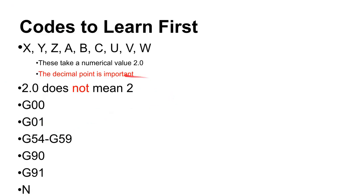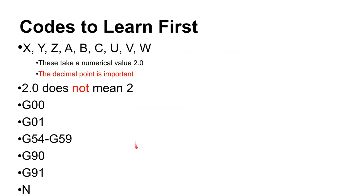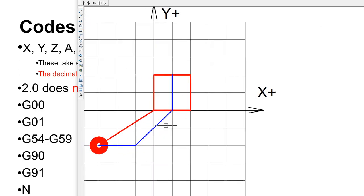To review: G1 moves in a straight line at a specified feed rate; G90 is absolute mode; G91 is incremental mode; G54 through G59 set the origin for the coordinate system. Looking at sample code: first, boilerplate safety code ensures the machine always behaves consistently at startup. Then a tool and tool offset are requested, the spindle turns on, a rapid move is made, and then linear moves are made.